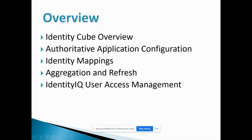Next is authoritative application configuration, then identity mapping. Identity mapping is something like whatever attributes are in our authoritative application or another application, we can map those attributes with the identity attributes. That is identity mapping. Then next is aggregation and refresh — aggregation basically reads data from the target application, and refresh recalculates the data of the identity.